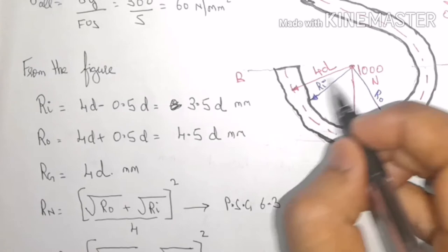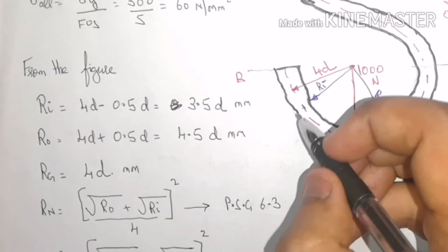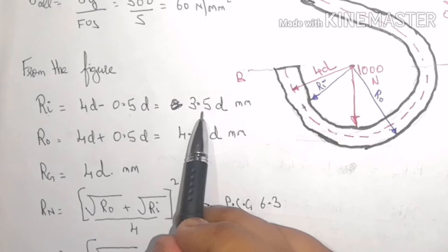If I want to calculate Ri, it will be 4D minus R or 0.5D. So I will write Ri is equal to 4D minus 0.5D which comes out to be 3.5D.